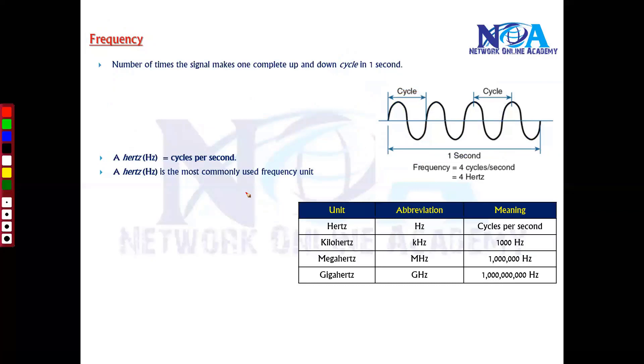Hertz is the commonly used frequency unit that defines how many cycles complete per second. Depending on the devices, it can be calculated in multiple options. Generally we calculate in Hertz, but when the number of cycles increases to one thousand or more, we represent it as kilohertz, megahertz, or gigahertz. This varies based on wide ranges, and we denote them depending on the number of zeros.